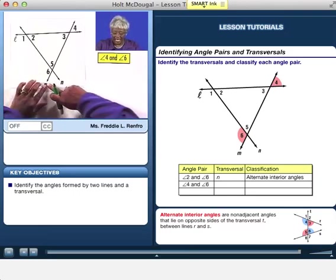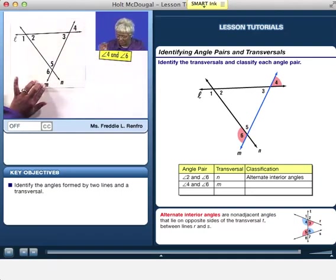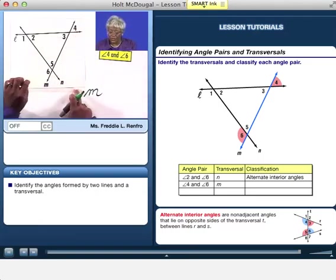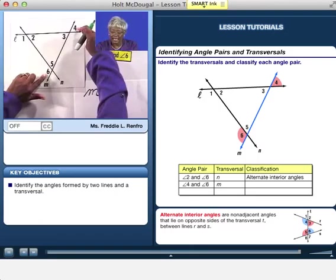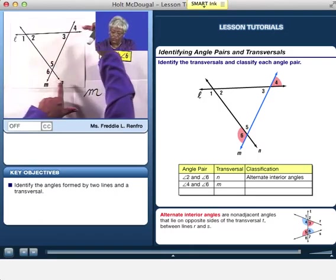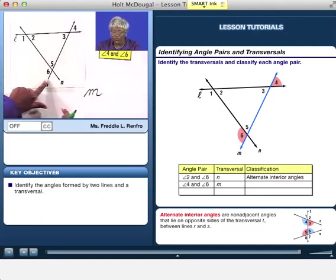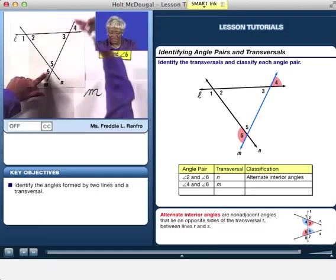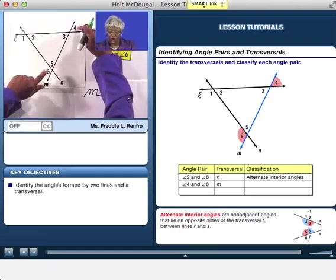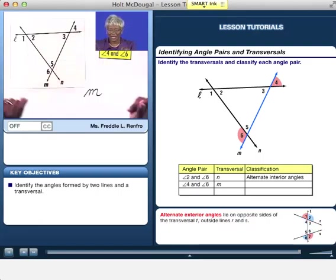Notice, if M is now the transversal, M is the transversal, and notice where 4 is and 6 is. Here are two lines that's being cut by the transversal. 4 is outside, 6 is outside, they're on opposite sides of the transversal. We got it.